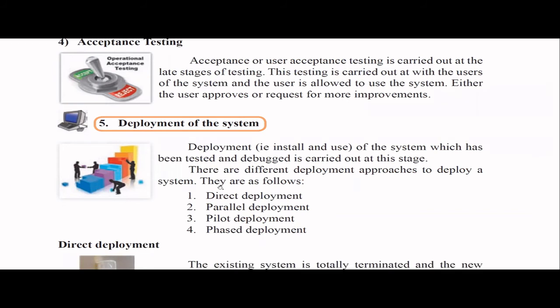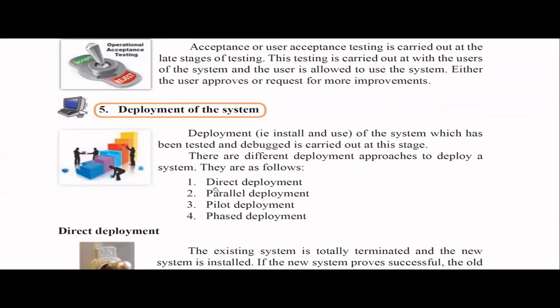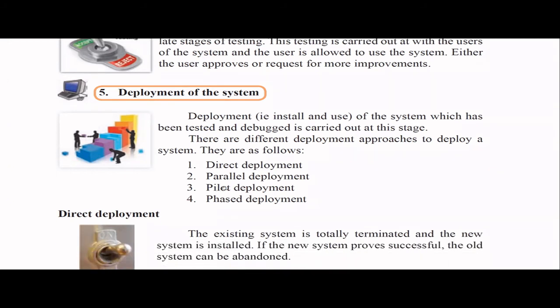Then comes deployment of the system — you go and install it in the particular place after testing and debugging. There are four ways to do deployment: direct, parallel, pilot, and phased.